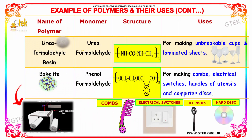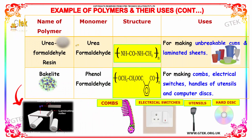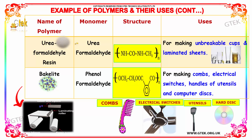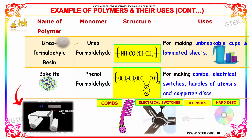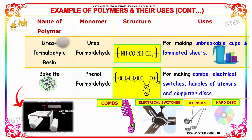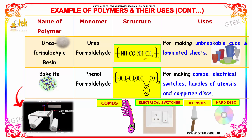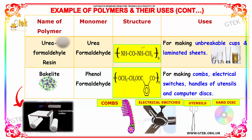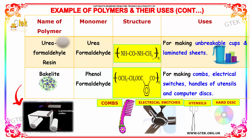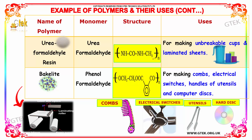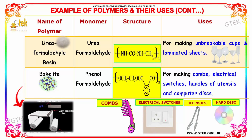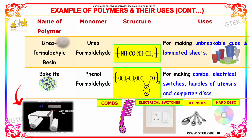Another important polymer is urea formaldehyde resin, whose monomer is urea formaldehyde and structure is NHCO-NHCH2 of n units. They are used in the making of unbreakable cups and laminated sheets.